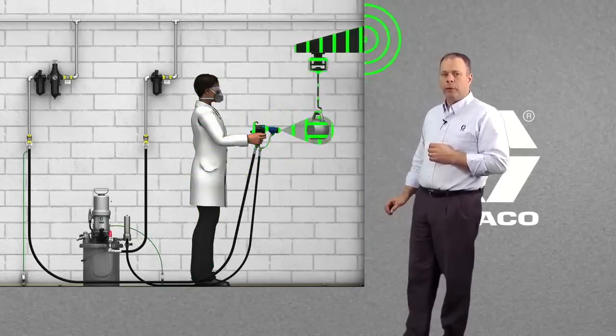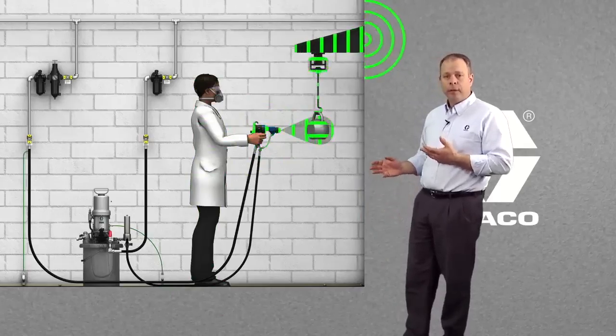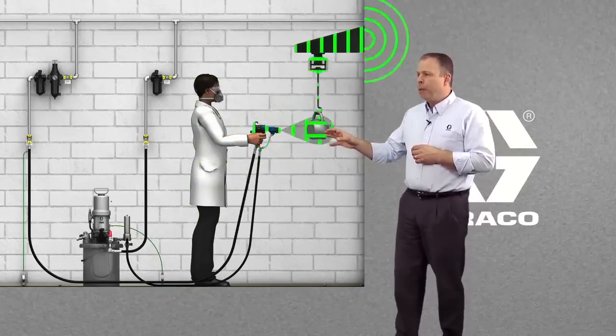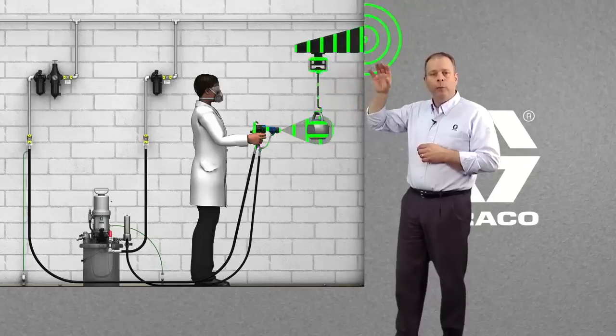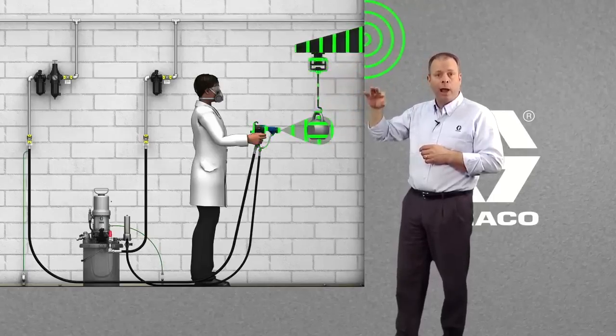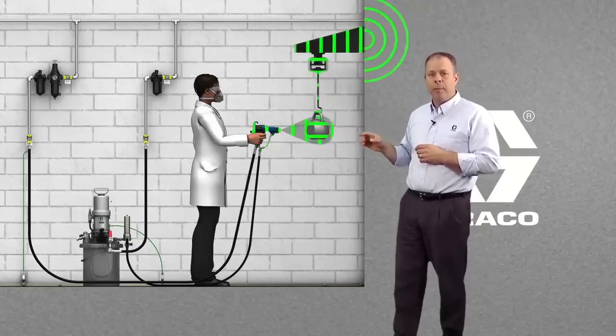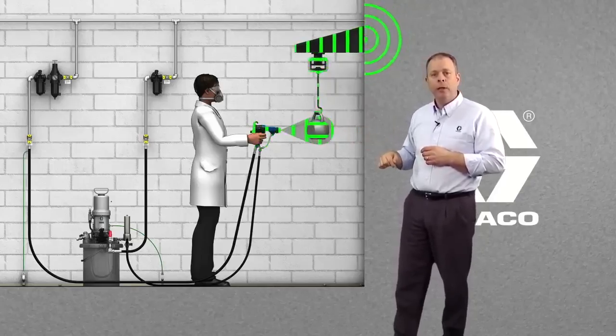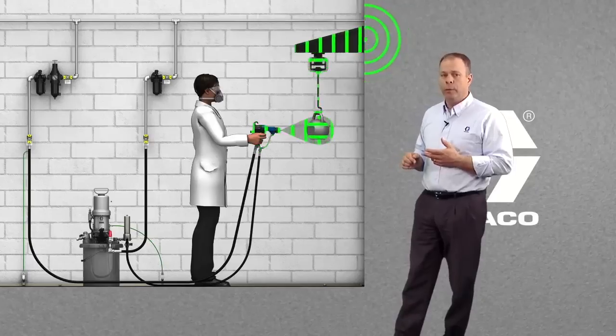We're going to talk about the grounding of the part itself. From my part through the conveyor, we want to make sure we have a true, good, true earth ground. And what that means is from a measurement from the part to earth ground should be no more than one megaohm resistance.